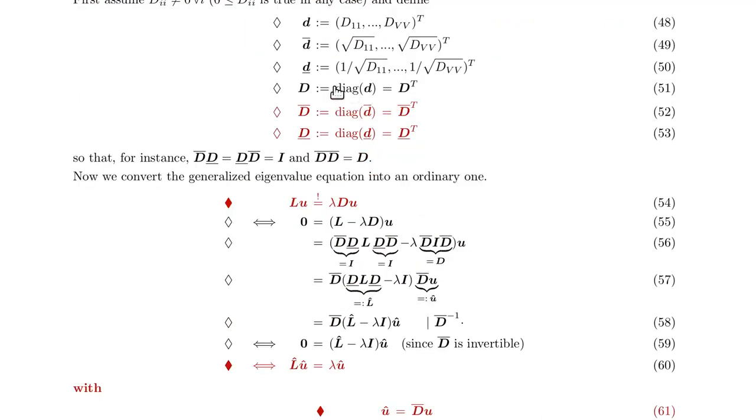This is simply taking the square root of matrix D or the inverse of the square root of matrix D. By the way, if you take the product of two such matrices it's the identity matrix. If you take the product of two times D bar, it is D again.